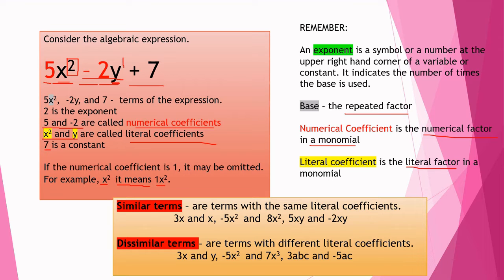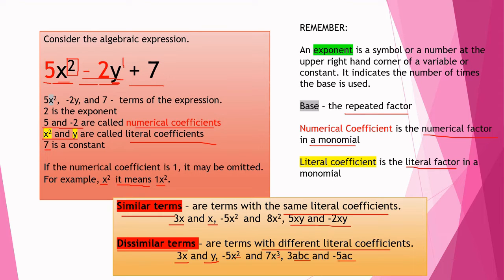Terms with the same literal coefficients are called similar terms. For example, 3x and x have the same variable. Negative 5x² and 8x² have the same variable and exponent. And 5xy and −2xy also share the same variables. Since these terms are similar, they can be combined.